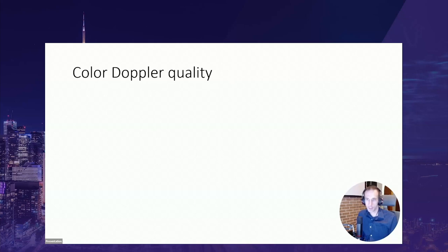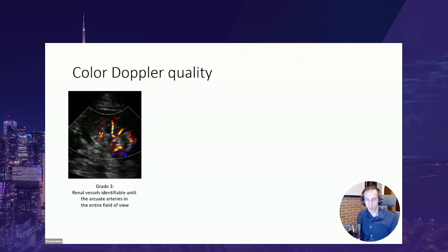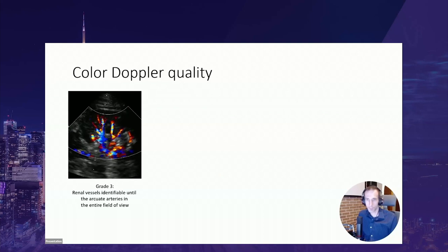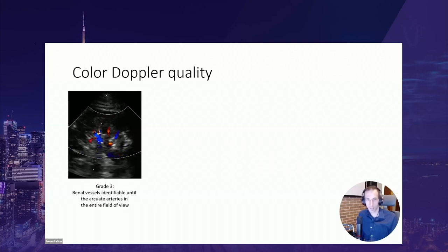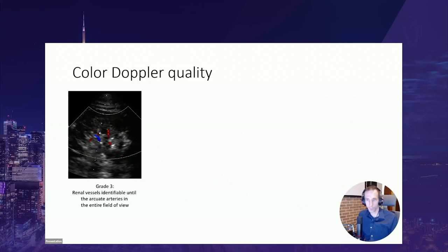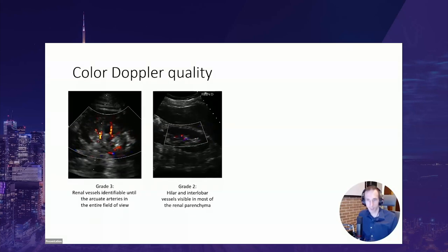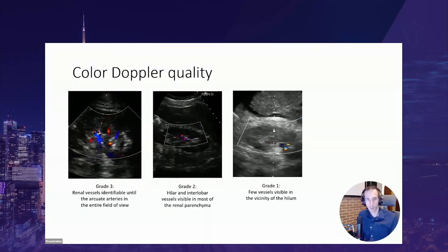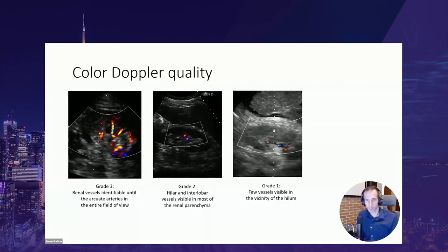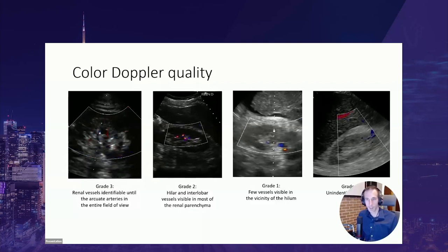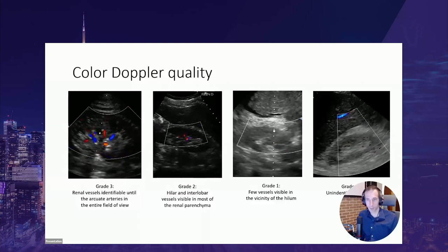Moving to abnormalities on Doppler ultrasound of the kidney: here is a normal color Doppler of the kidney. Some authors have proposed a semi-quantitative scale to assess kidney perfusion. Grade 3 means vessels are visible throughout the entire field of view. Grade 2 shows vessels only in the interlobar region but not beyond. Grade 1 shows vessels only in the vicinity of the hilum. Grade 0 means no vessels are visible on color Doppler.